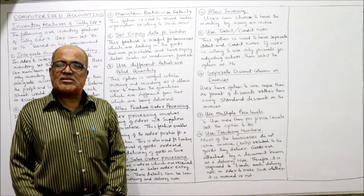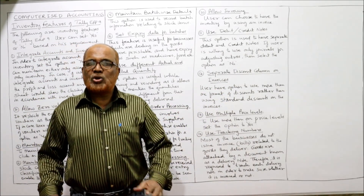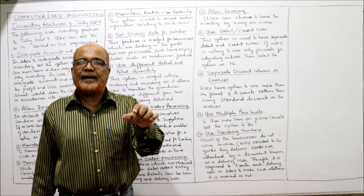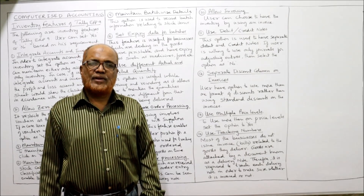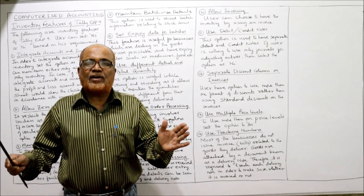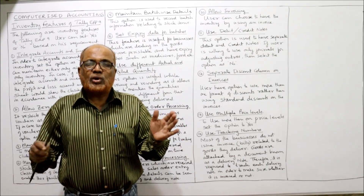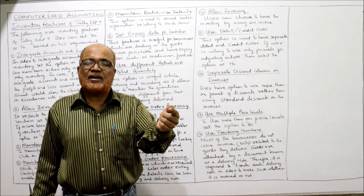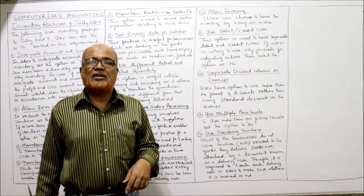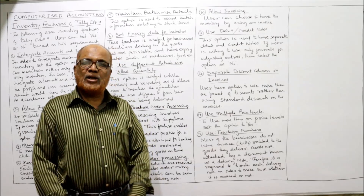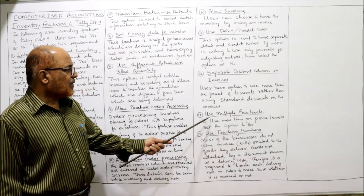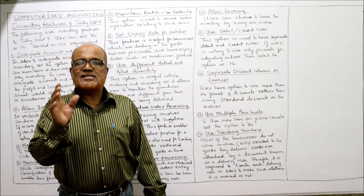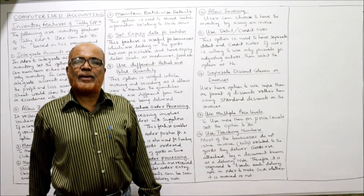The twelfth feature is: separate discount columns for invoices. It is not necessary that the same rate of discount will be applied on every invoice — the discount rates may differ. The user can choose whether they want a fixed rate of discount or different discount rates for different invoices.